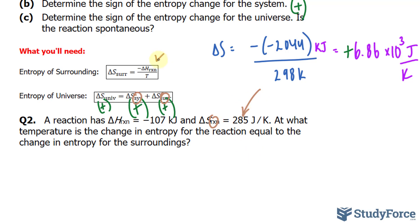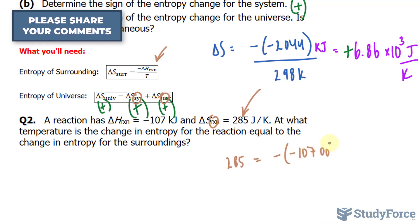And then, use this formula to solve for T. So I have 285 is equal to negative, and I'll replace that part with negative 107000.